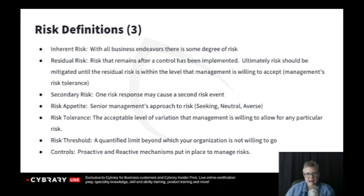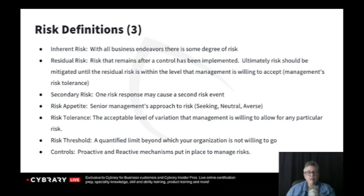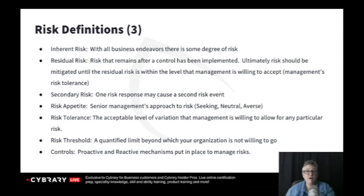Within that risk appetite, you may have variances — that's risk tolerance. Tesla, for example, is a very risk-seeking enterprise. But because their self-driving vehicles have been involved in several fatal crashes, their risk tolerance for anything revolving around loss of human life is very, very small. Risk tolerance is the variation within the overall risk appetite for specific areas.